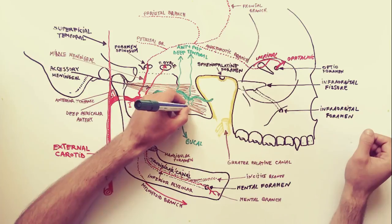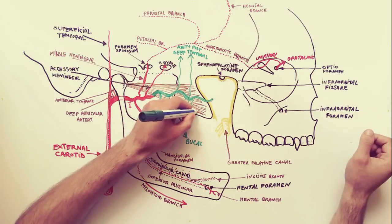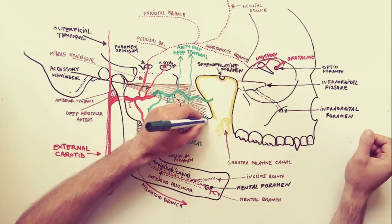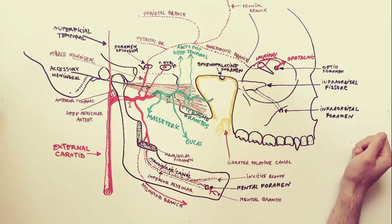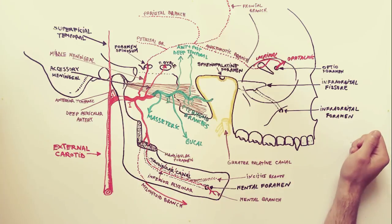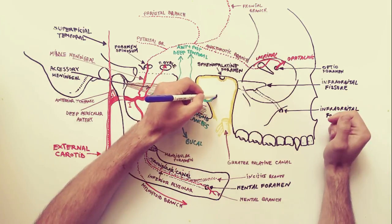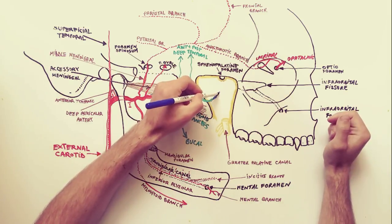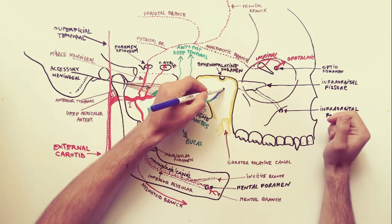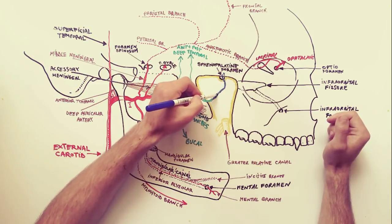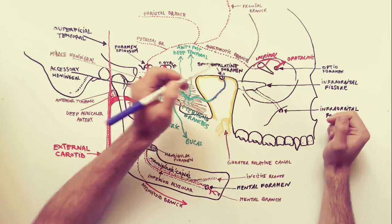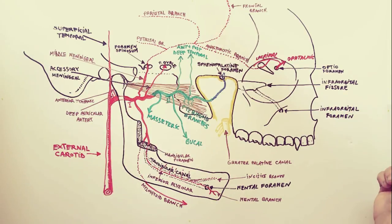Lastly, from the second part of the maxillary artery, we have pterygoid branches. These branches can be three to five in number and supply the pterygoid muscles. The third part of the maxillary artery will be indicated using the blue color.